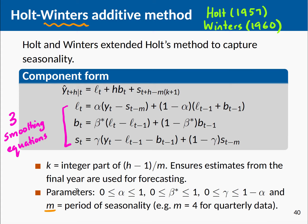You have the regular restrictions on the smoothing parameters: alpha and beta lying strictly in the 0–1 interval, and gamma which lies between 0 and 1 minus alpha. M denotes the period of seasonality — if you have monthly data, M equals 12; quarterly data, M equals 4, and so on.